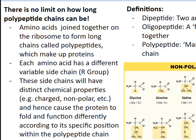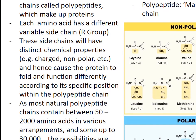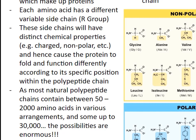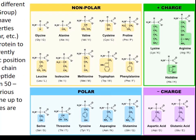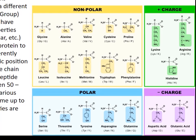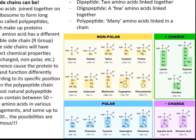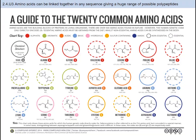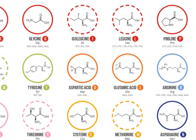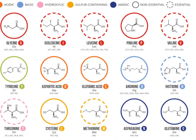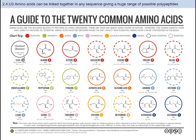This is why proteins are so complex. Think about the math: there are 20 different amino acids that you can choose from that have different R groups. These R groups have distinct chemical properties, like polar or nonpolar, and positively or negatively charged, and they cause the protein to fold and function differently according to its specific position within the polypeptide chain. Most natural polypeptide chains contain between 50 and 2,000 amino acids in various arrangements, and some up to 30,000, so the mathematical possibilities for combinations are extreme. You just need to be able to classify the amino acid chemical properties based on the R group properties.